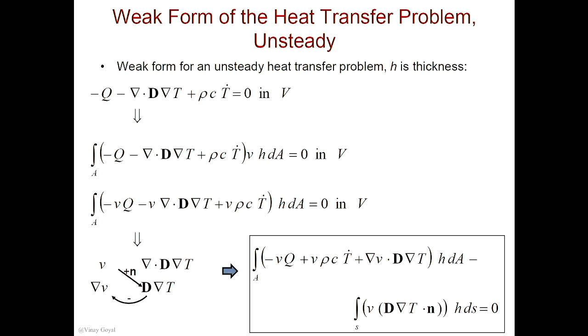So when I write my weak form, I'll bring this back — I'll multiply this by that, bring it back to my weak form, and this times that goes to my boundary. So I have minus VQ there, plus V rho C T-dot there. And then what I've done is I've brought this term back in here. There's another way to write it — it's gradient V transpose, but no dot. And then that's the one that goes back into the area integral.